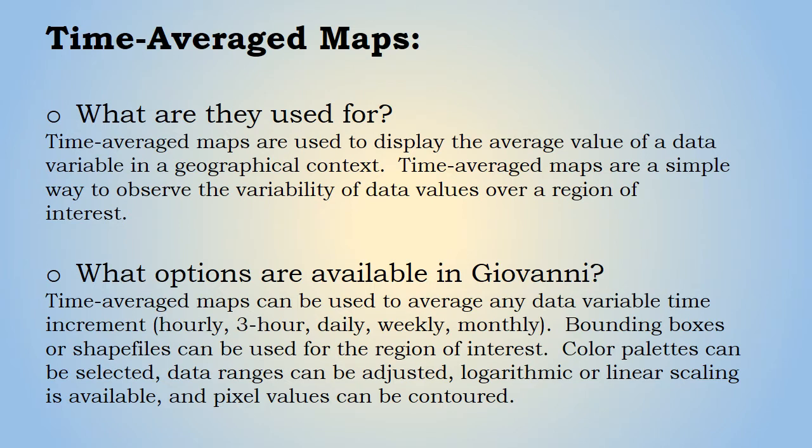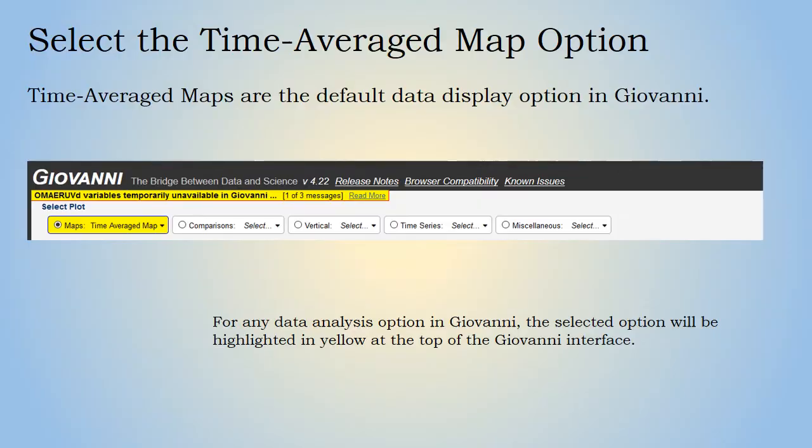Giovanni has several options for time average maps. They can be used to average any data variable at time increments of hourly, three-hour, daily, weekly, or monthly. Bounding boxes or shapefiles can be used for the region of interest, color palettes can be selected, data ranges can be adjusted, and logarithmic or linear scaling is available. Pixel values can also be contoured.